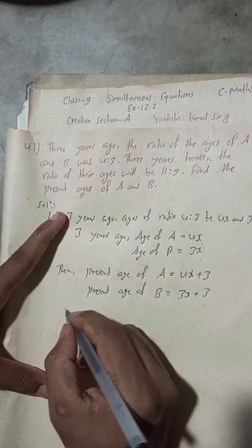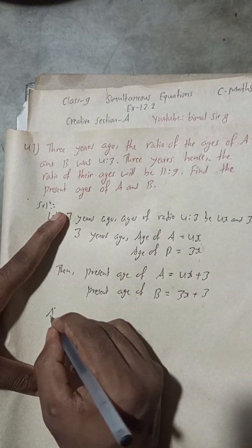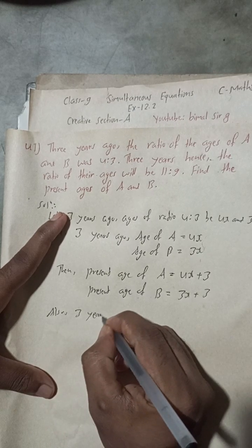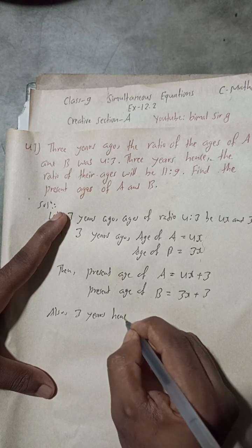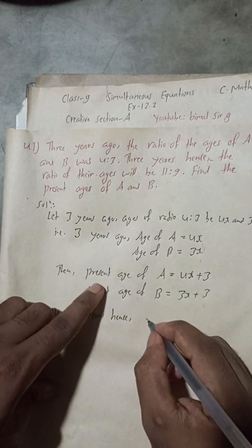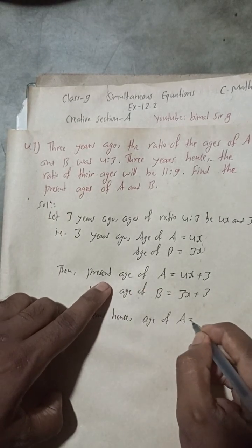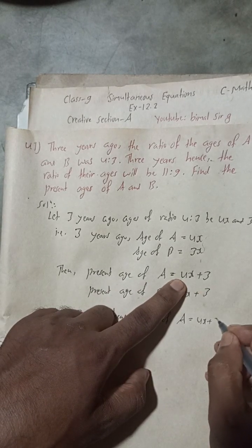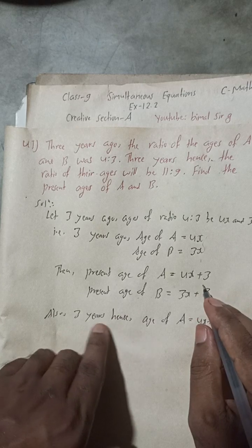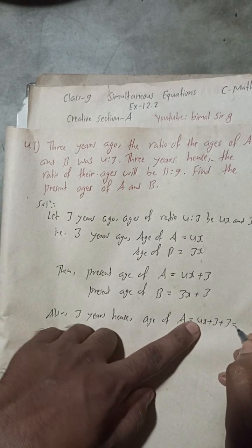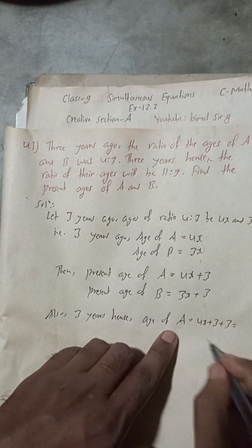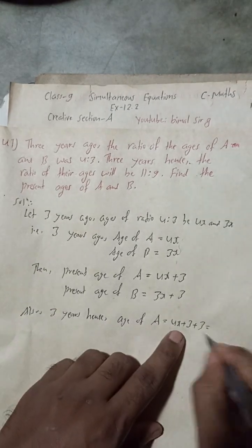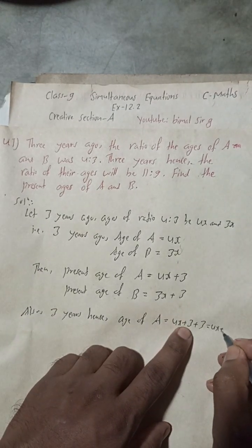Three years hence means after 3 more years. Age of A three years hence will be the present age 4X plus 3, plus 3 more years, which gives 4X plus 6.